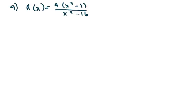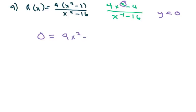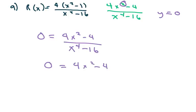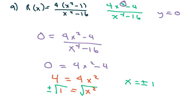This one I'll rewrite as 4x squared minus 4 over x to the 4th minus 16. The horizontal asymptote is y equals 0 since the numerator degree is smaller. Cross multiplying gives 0 equals 4x squared minus 4. Adding 4 to both sides: 4 equals 4x squared, so x squared equals 1. Taking the square root of both sides — don't forget the plus and minus — x equals plus or minus 1. It crosses twice, at (1, 0) and (negative 1, 0). It would be good to put this one in the calculator and see what it looks like.